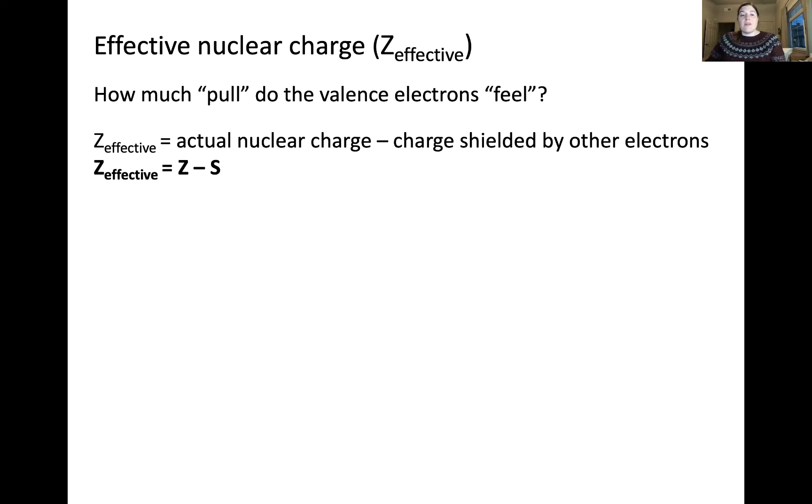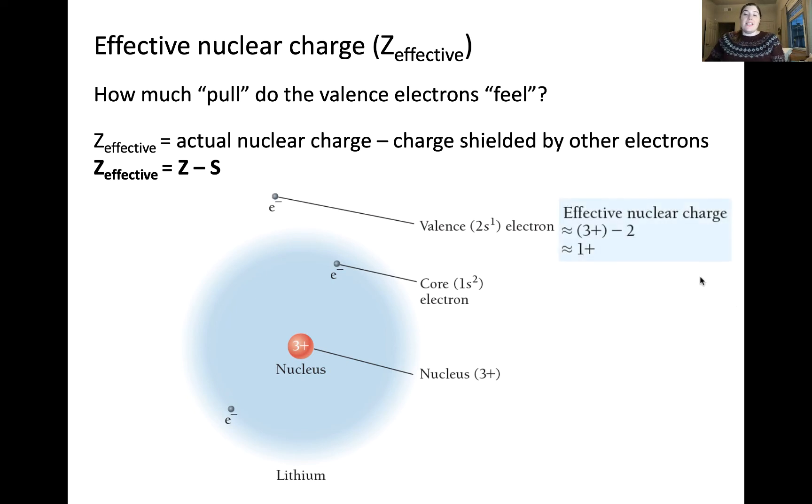So the effective nuclear charge can be approximated by considering the actual nuclear charge of the atom in question, as well as the charge that's being shielded by other electrons. For our lithium atom with a nucleus that has a positive 3 charge, we can estimate the effective nuclear charge for this valence electron in the 2s orbital. That can be done by taking the nuclear charge minus the charge that's being shielded by these two electrons in the 1s orbital. This produces an approximate effective nuclear charge of plus 1, which is much lower than it would be if the core electrons were not shielding the valence electron.